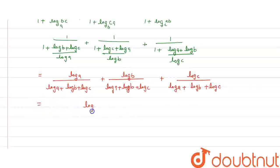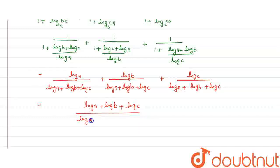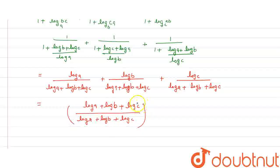This comes out as log a plus log b plus log c upon log a times log b times log c. The terms cancel out and this simplifies to 1. When we simplify this, the answer comes as 1.